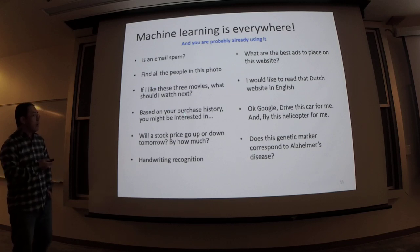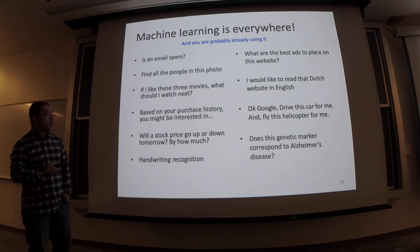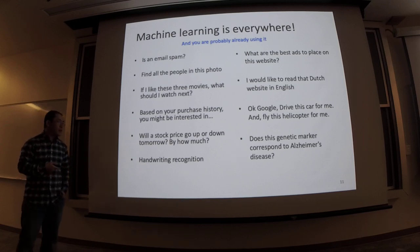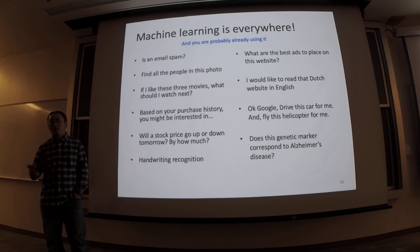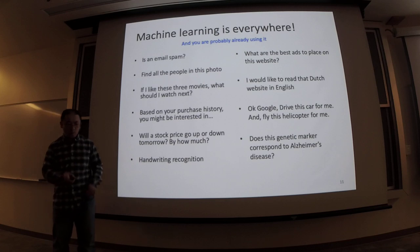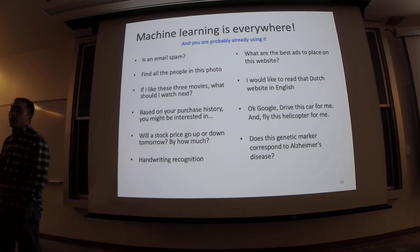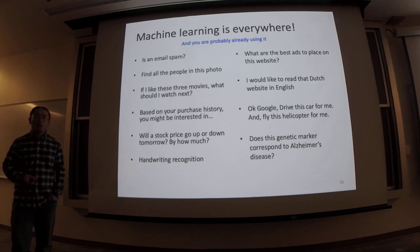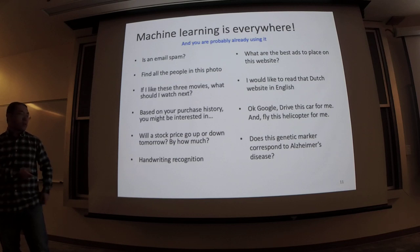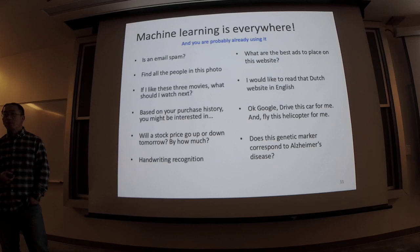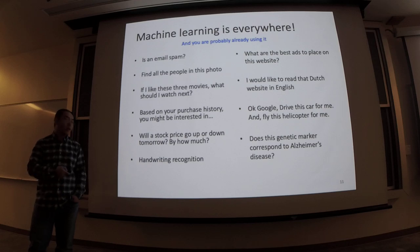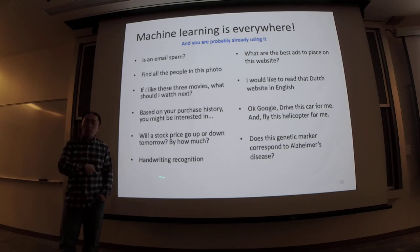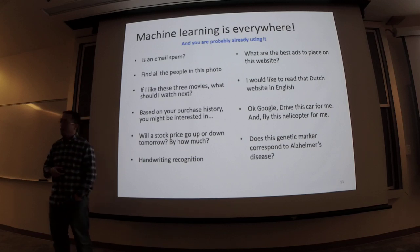More applications: recommendation based on purchase history, stock price prediction, and handwritten digit recognition. The USPS has been using machine learning for decades — there aren't many people manually reading postcodes and sorting mail; 99% is done by machines. This was applied many years ago. A very successful neural network for doing this, called LeNet, was developed by Yann LeCun, who just received the Turing Award last year.